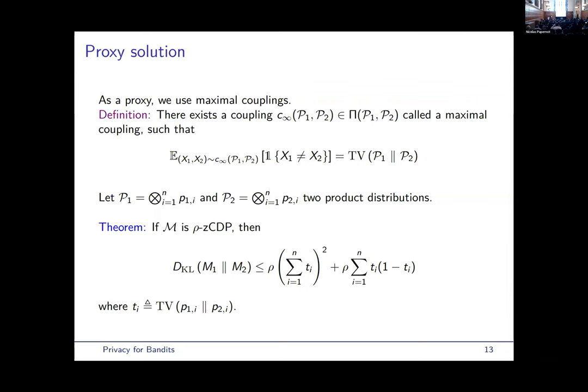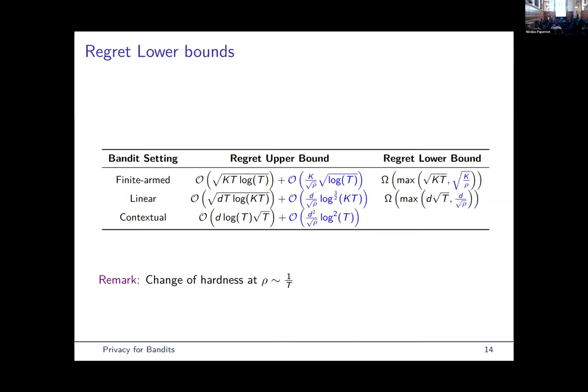So, this is the main information theoretical bound to prove the lower bounds. We plug them inside the generic proofs of regret lower bounds in bandits, and we get the third column here of lower bounds. So, the lower bounds are written as a max between two quantities, the non-private one and the new one that we get by plugging our new KL upper bound. This lower bound suggests the existence of two hardness regimes depending on comparison between the privacy budget and 1 over T, and the upper and lower bounds match up to logarithmic terms.